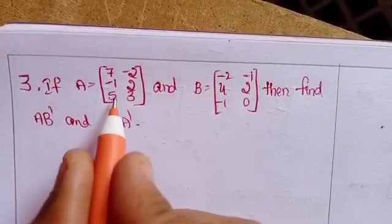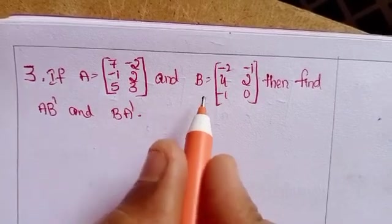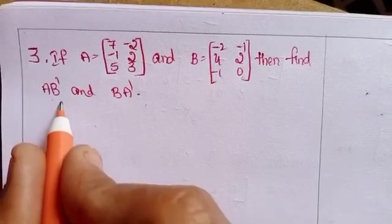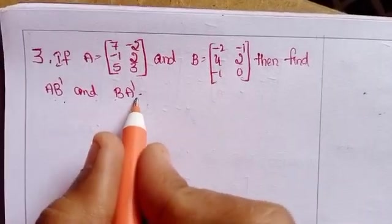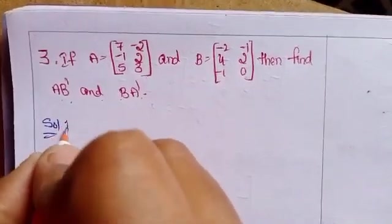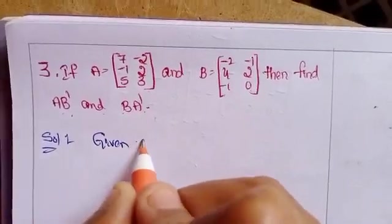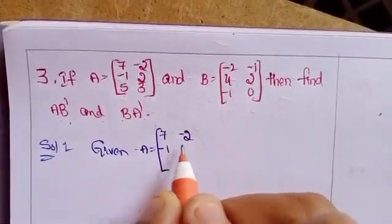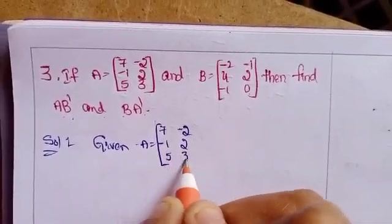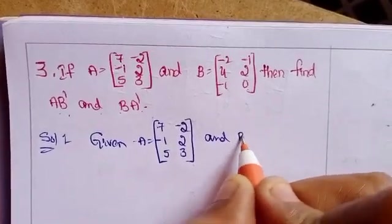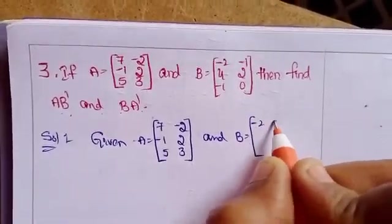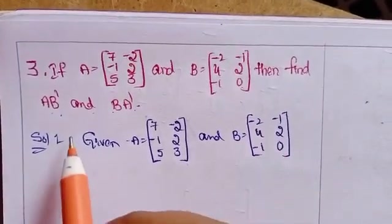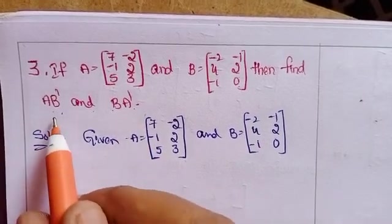Third problem: If A equals 7, minus 2, minus 1, 2, 5, 3 (a 3×2 matrix) and B equals minus 2, minus 1, 4, 2, minus 1, 0 (a 3×2 matrix), then find A into B transpose and B into A transpose. Solution: First find A transpose and B transpose. A transpose is 7, 2, minus 1, 5, minus 2, 3.